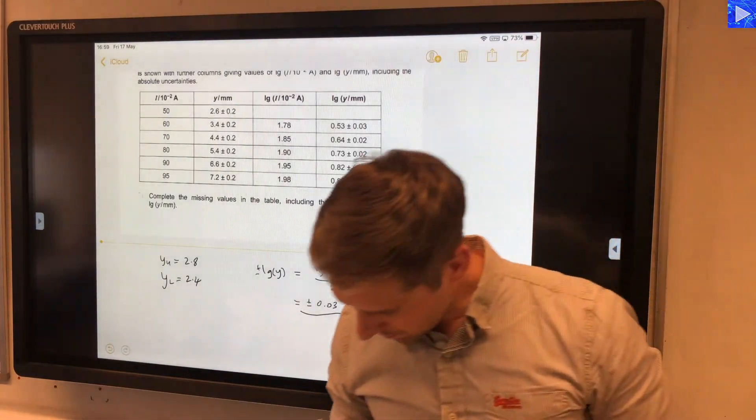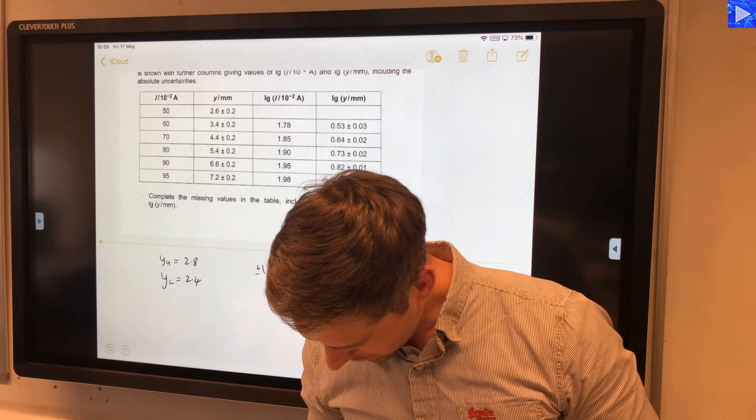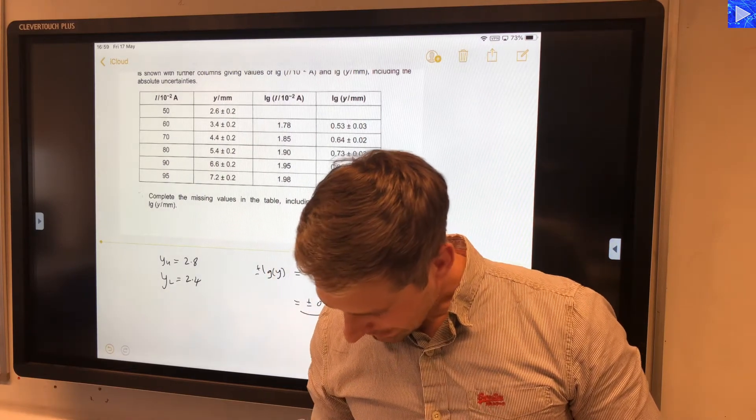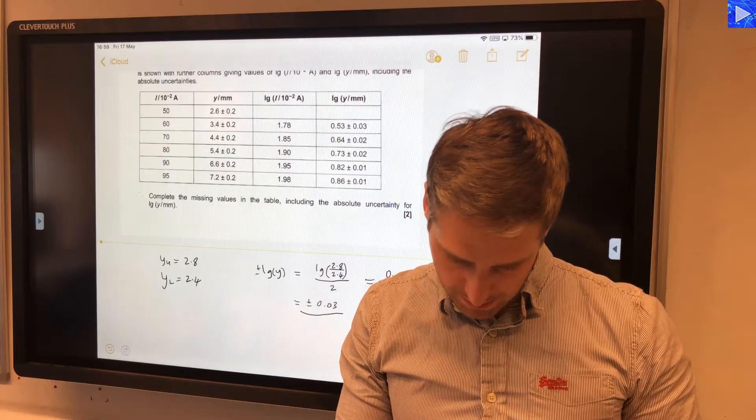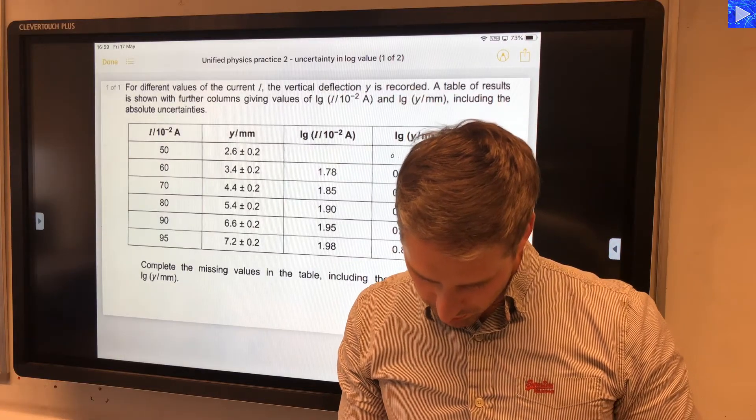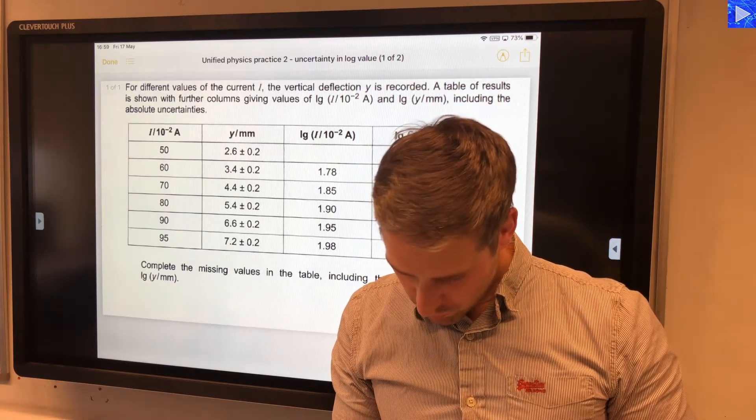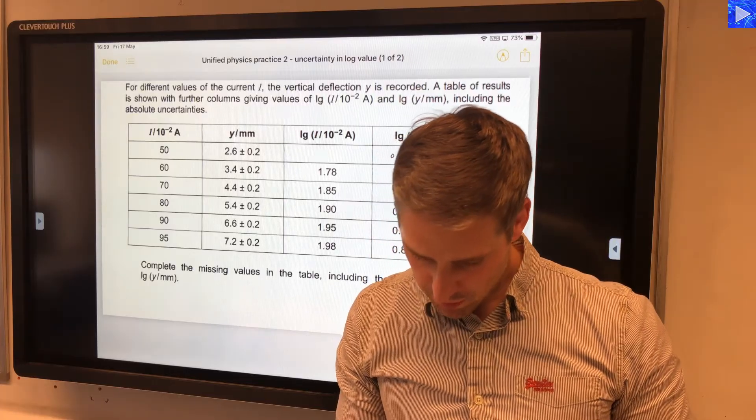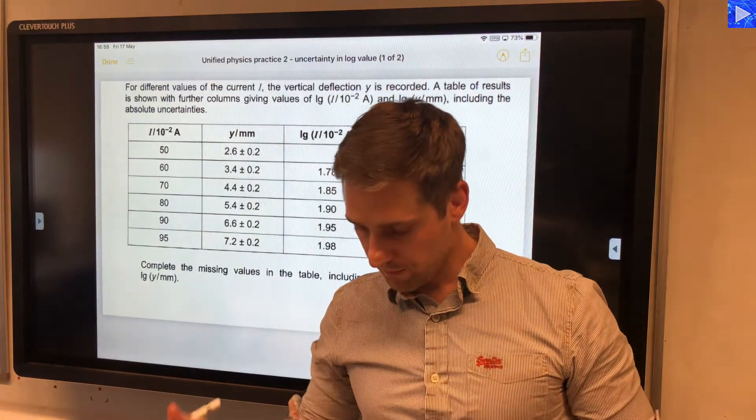So if I work that out, log of 2.6, that's 0.42. So it's 0.41497.